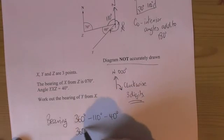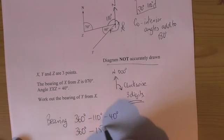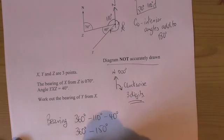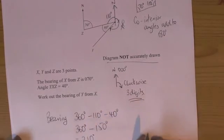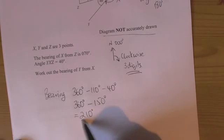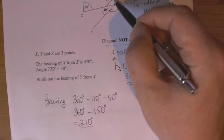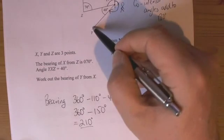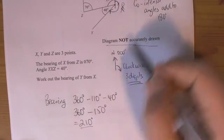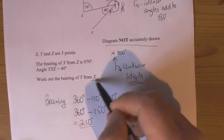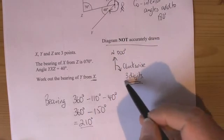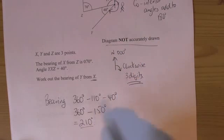So that's the same as doing 360 take away 150 degrees. And then when I work that out, it's 210 degrees. This has three digits in it already, so I've met the conditions of, I've turned clockwise from north, I'm facing the direction I want to, I'm facing Y, because it says Y from X, so I'm stood at X, and I've got my three digits, 210 degrees. So that's bearings.